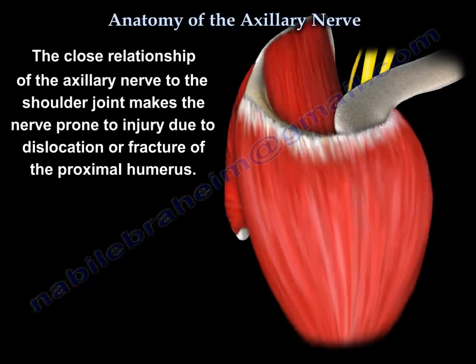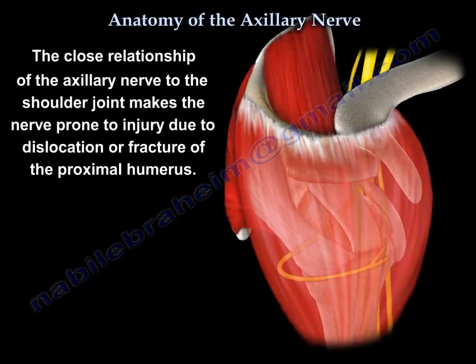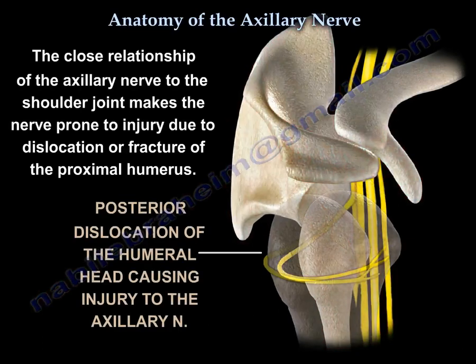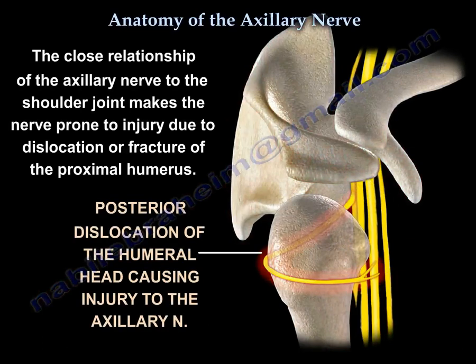This close relationship to the joint makes the nerve more prone to injury from dislocation of the shoulder or fracture of the proximal part of the humerus.